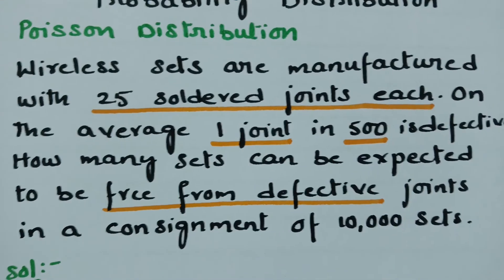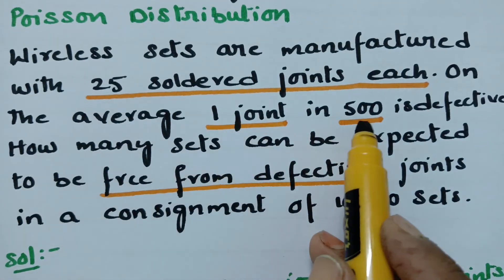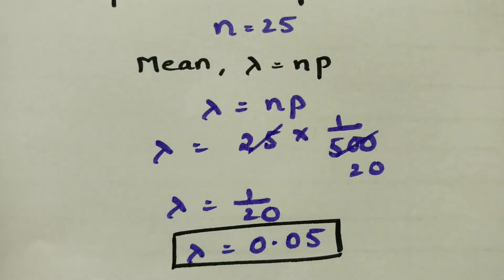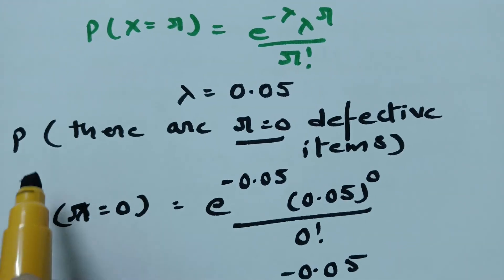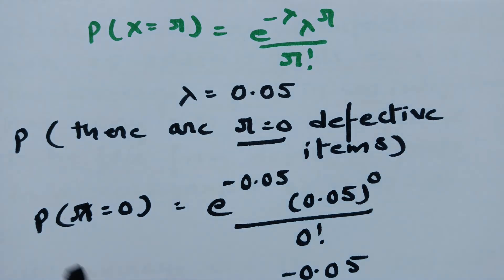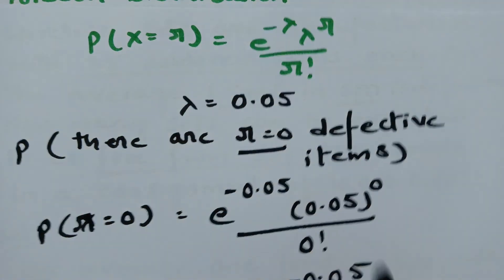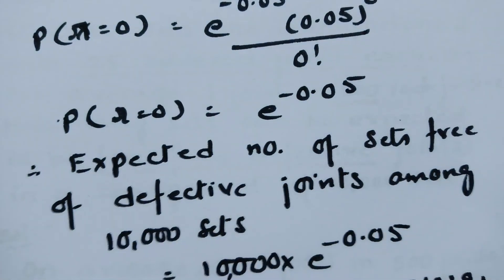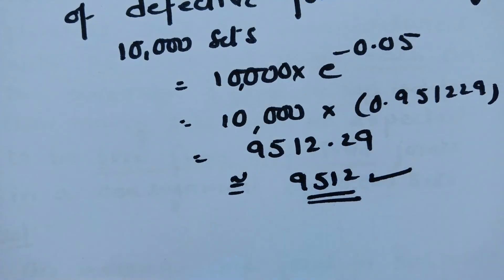So if you understand the question it is very easy to solve. Wireless sets are manufactured with 25 soldered joints each, so N is equal to 25. On the average one joint in 500 is defective, so P is equal to 1 by 500. After getting N and P, lambda is equal to N into P, giving lambda equal to 0.05. The probability of zero defective items using the Poisson formula gives E power minus 0.05. Therefore the expected number of sets free from defective joints among 10,000 sets is 9,512 non-defective items. Thank you so much for watching.